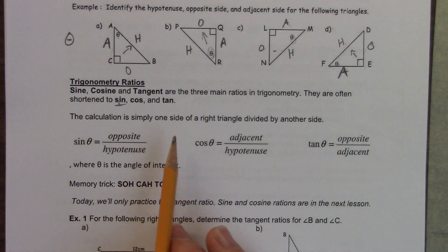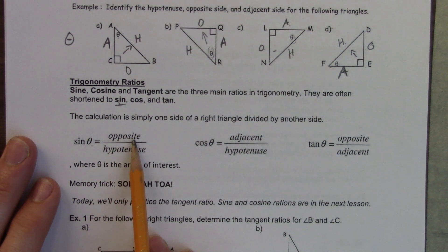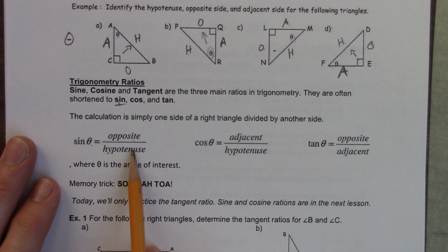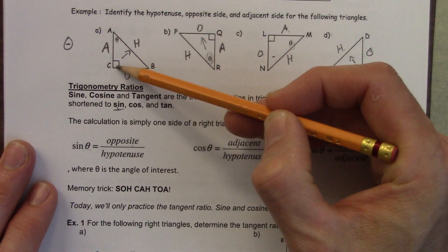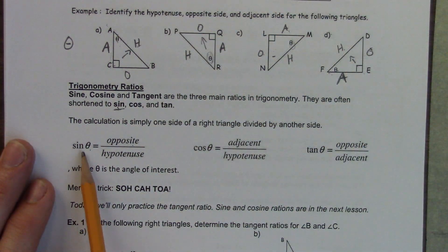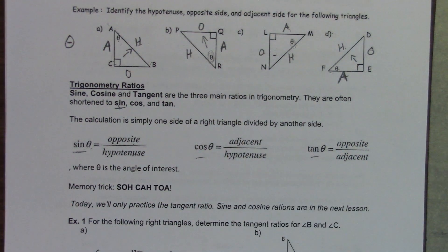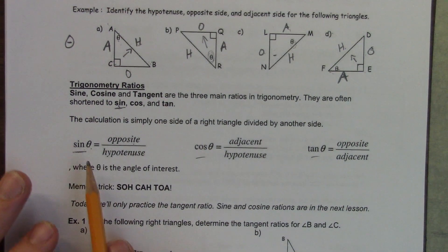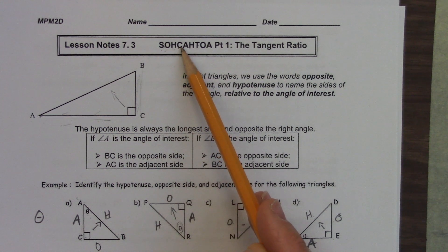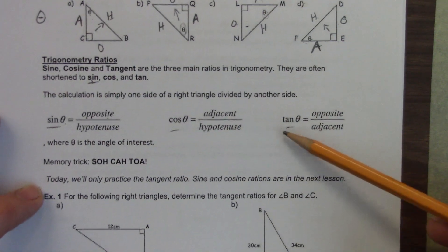The calculation is simple: one side of the right triangle divided by the other side. Sine of the angle equals the opposite side over the hypotenuse. Cosine is adjacent over hypotenuse. Tangent is opposite over adjacent. For example, sine of theta for triangle A would be the ratio of CB over AB. These ratios - sine, cosine, tangent - are just ratios of two side lengths, nothing more.